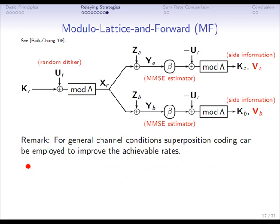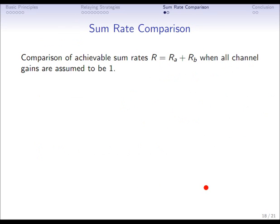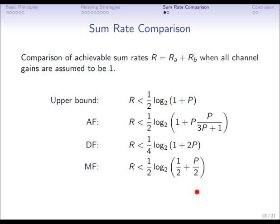To extract the lattice point of the other user we employ the side information principle again. For general channel conditions, various strategies are proposed — one is superposition coding to improve achievable rates, but I won't go into that here. The sum rate comparison will be done for the case where all channel gains are equal to one. Inserting these channel gain assumptions gives the achievable rates, and I also provide an upper bound — the so-called cut-set bound.